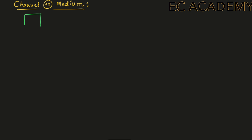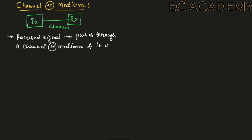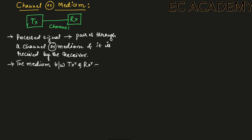Generally, a channel will act as a path between a transmitter and a receiver. Whatever signal is transmitted by a transmitter will pass through the channel and will be received by the receiver. Once the signal is processed by the transmitter, it passes through a channel or a medium and is received by the receiver at the other end of the channel.